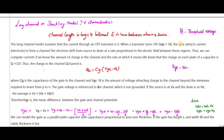When VGS is greater than VT, the gate attracts electrons to form the channel. The electrons drift from source to drain at a rate proportional to the electric field in that region. We can compute the current if we know the amount of charge in the channel and the rate at which it moves. We know that the charge on each plate of a capacitor is Q = CV.